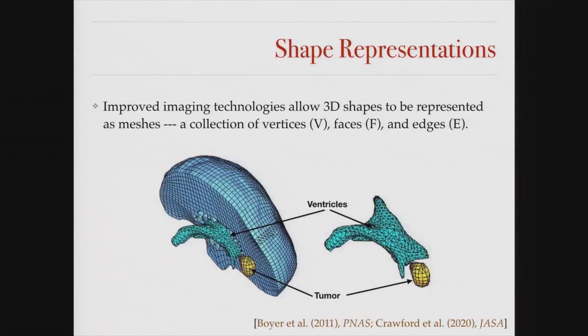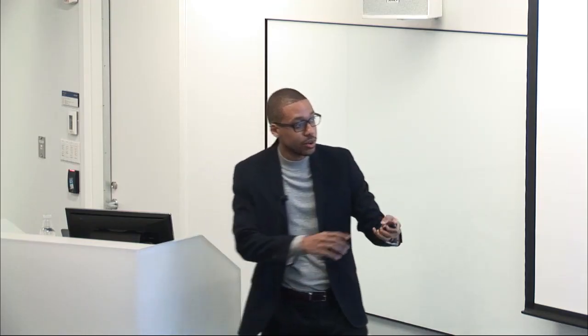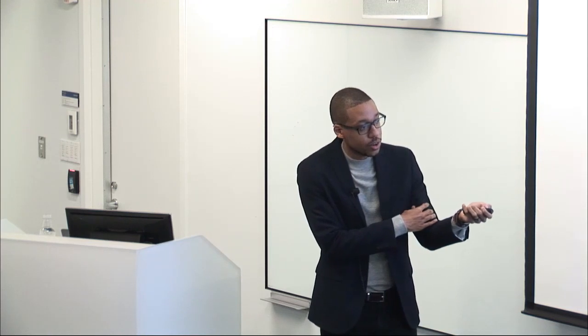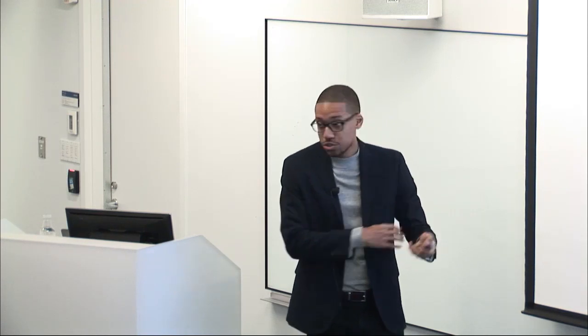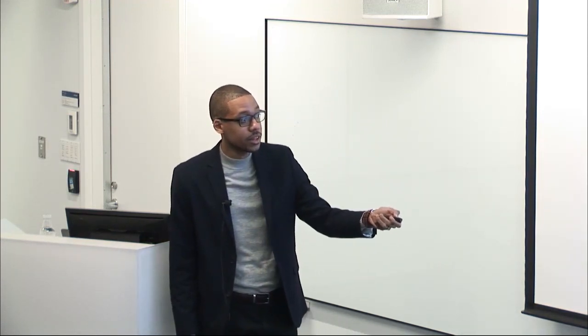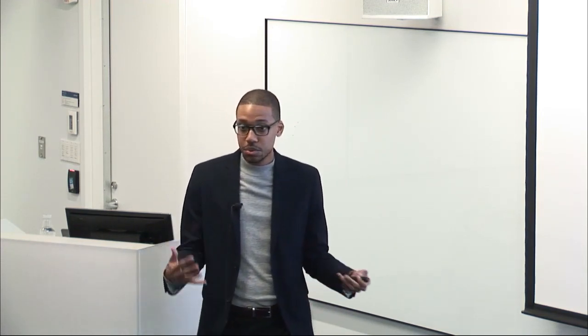We're going to focus on this idea that new shape technologies now create meshes where we can represent 3D objects — basically a collection of vertices, edges, and faces. We can do triangularizations over objects. This is a tumor. We're going to do sweeps over these triangular meshes. Since data can be represented this way, we're going to take advantage of this new representation. That's where TDA has really become a big part of this space.